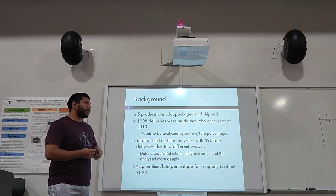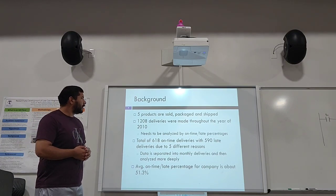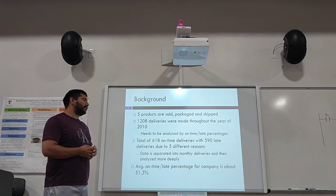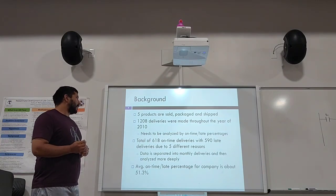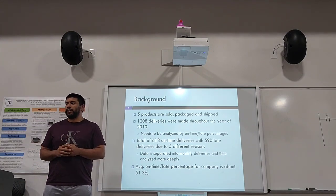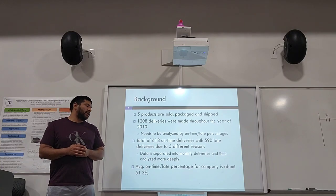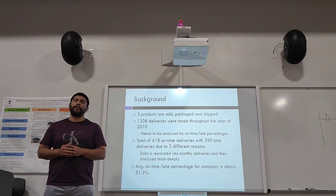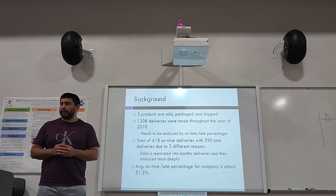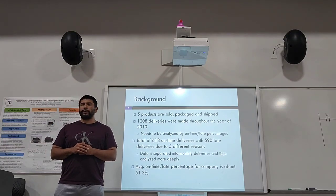A total of 618 on-time deliveries with 590 late deliveries due to five different reasons. The data is then separated into monthly deliveries and analyzed more deeply. Based on the overall data from the whole year, there is an average of on-time to late percentages of 51.3 percent.